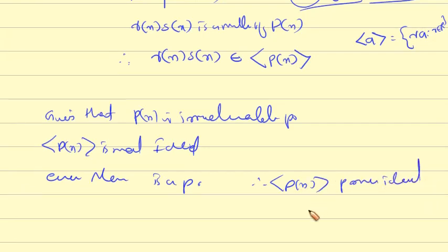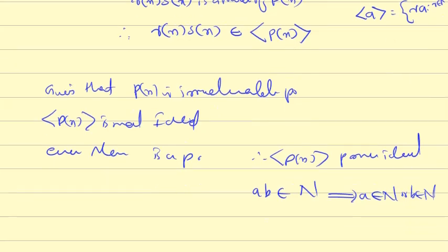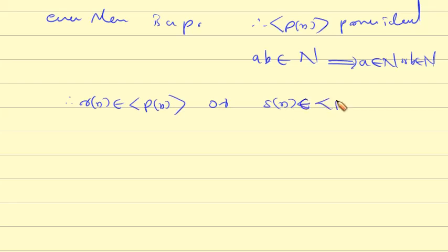Now, by the definition of a prime ideal: if a times b belongs to the ideal n, then either a belongs to n or b belongs to n. Since r(x) times s(x) belongs to the prime ideal generated by p(x), therefore r(x) belongs to the ideal of p(x) or s(x) belongs to the ideal of p(x).